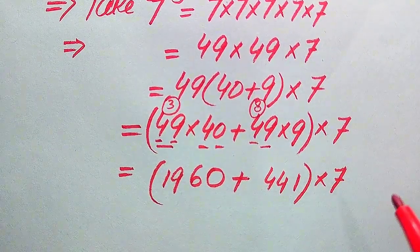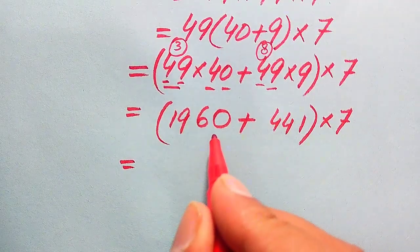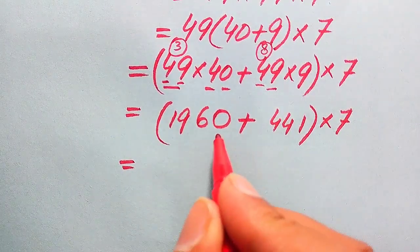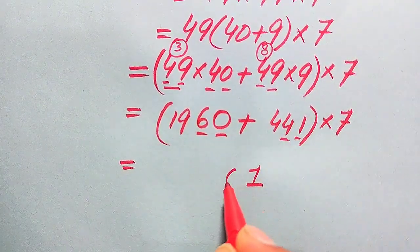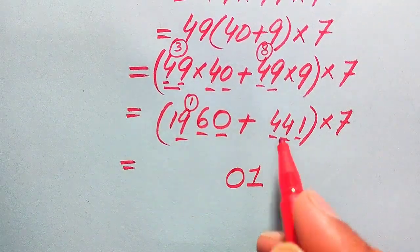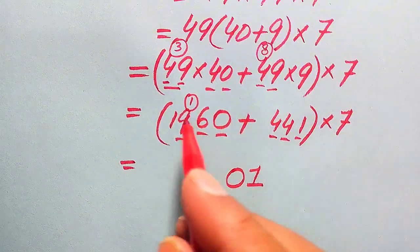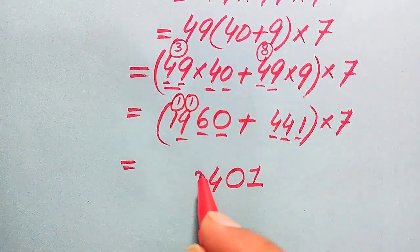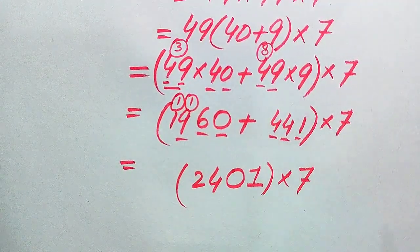The resulting answer is multiplied by 7. We sum both values: 1960 plus 441. Adding: 0 plus 1 is 1; 6 plus 4 is 10, write 0 carry 1; 9 plus 4 is 13, plus 1 is 14, write 4 carry 1; 1 plus 1 is 2. So we get 2401, and this is multiplied by 7.